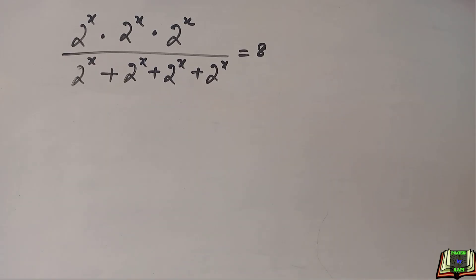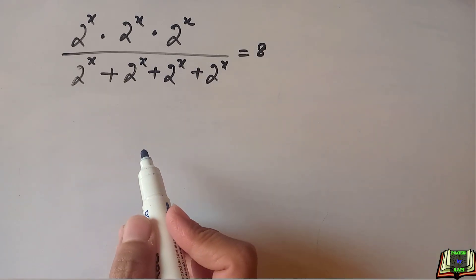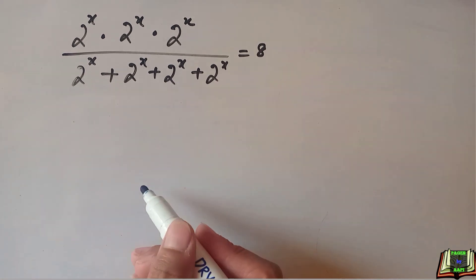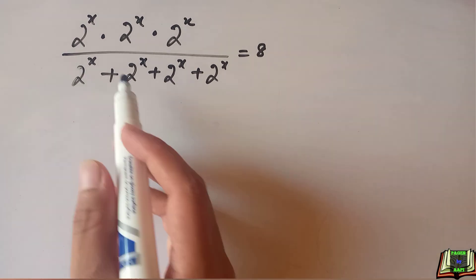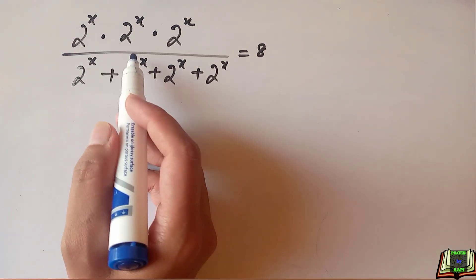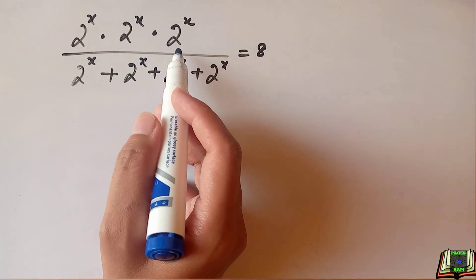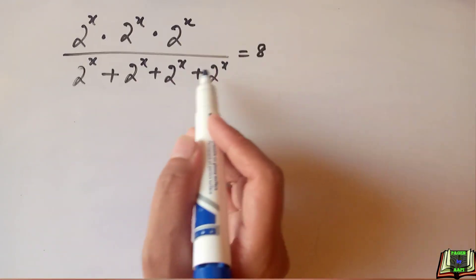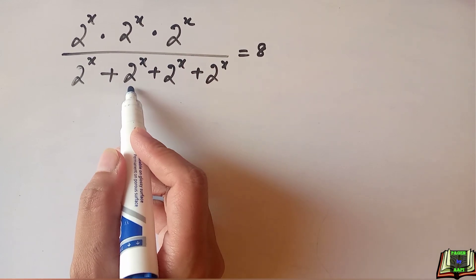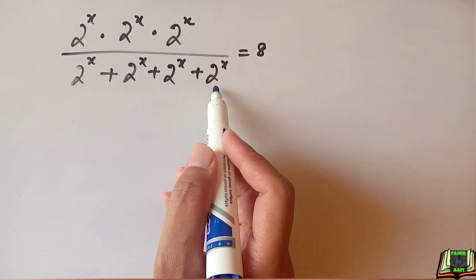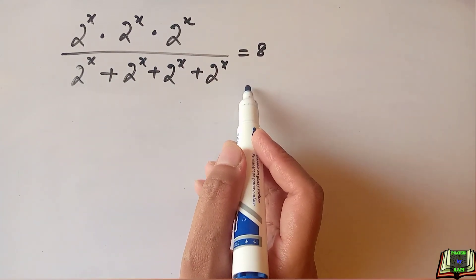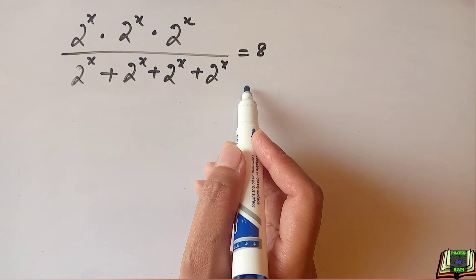Welcome back. Let's solve this exponential problem using the laws of exponents. If 2 to the power x times 2 to the power x times 2 to the power x, whole divided by 2 to the power x plus 2 to the power x plus 2 to the power x plus 2 to the power x is equal to 8, then we have to solve for x.